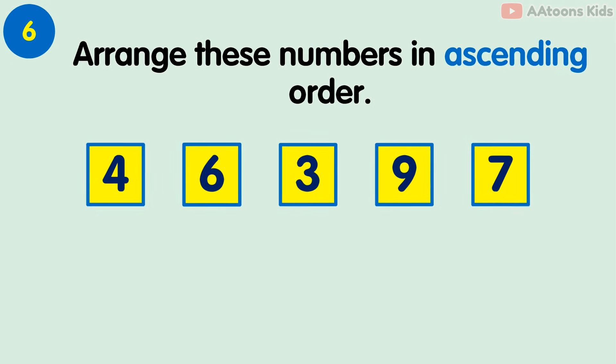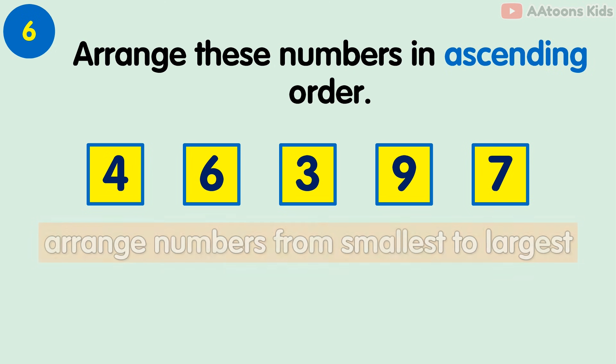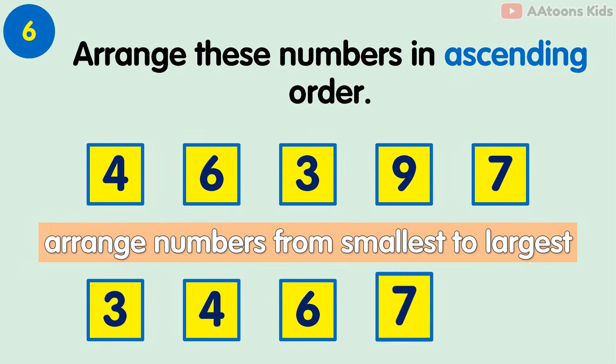Arrange these numbers in ascending order. Ascending order means smallest to largest. So arrange these numbers from smallest to largest: 3, 4, 6, 7, 9.